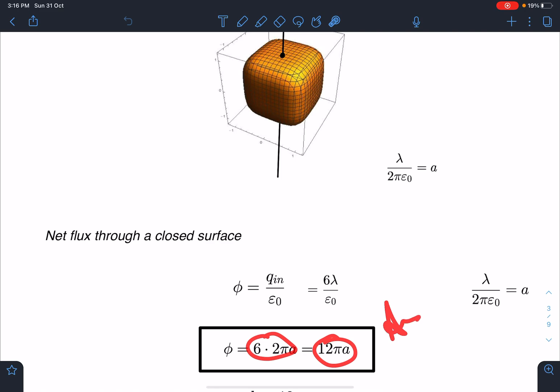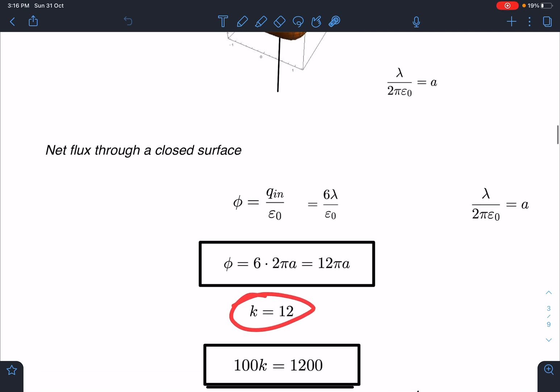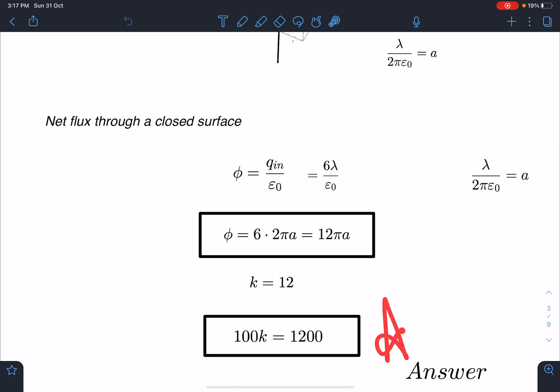So 12 pi a is going to be the total flux passing through this. And it is given in the form of k pi a. So k is 12 and 100k value is 1200. And luckily it is an integer. This is going to be the final answer.